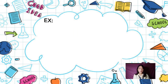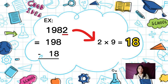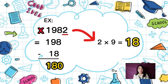On the other hand, 1,982 is not divisible by 13. The last digit is 2, so 2 times 9 is 18, and 198 minus 18 equals 180. Since 180 is not divisible by 13, 1,982 is not divisible by 13.